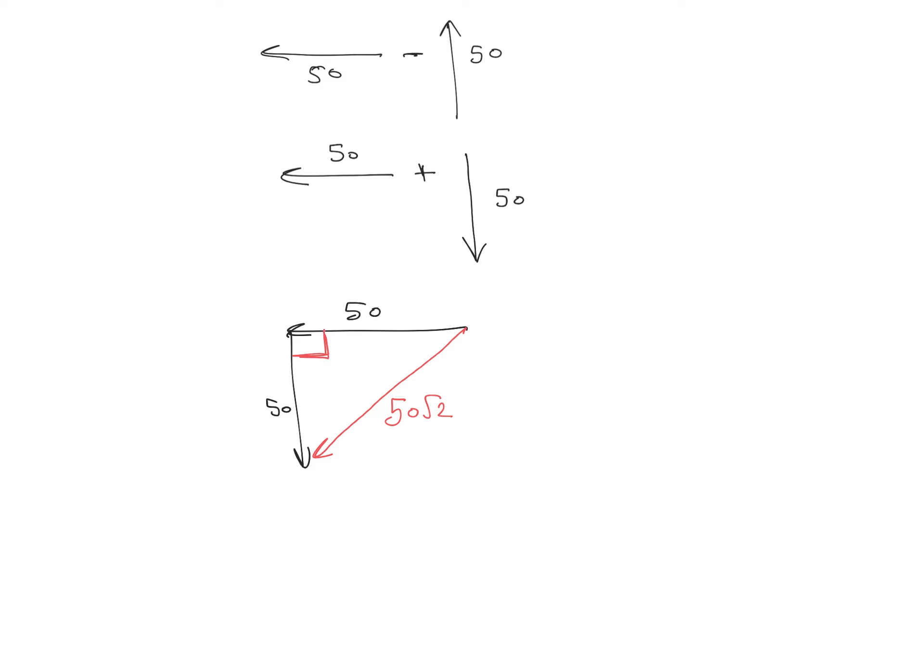And we can observe its direction also. This direction is nothing but west and this direction is nothing but south. So this direction, that is the direction of change in velocity, is nothing but southwest or west-south.